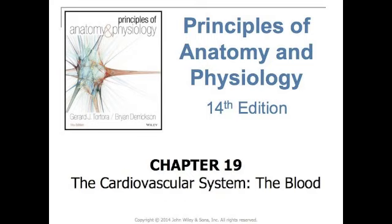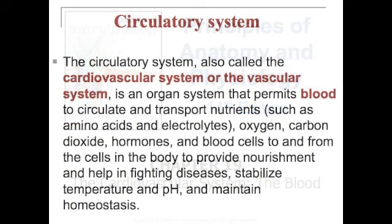Tonight's lecture concerns the cardiovascular system, and specifically the blood. This is chapter 19 in your textbook, beginning on page 696. The circulatory system, also called the cardiovascular system or the vascular system, is an organ system that permits blood to circulate and transport nutrients such as amino acids and electrolytes, oxygen, carbon dioxide, hormones, and blood cells to and from the cells in the body to provide nourishment, help in fighting diseases, stabilize temperature and pH, and maintain homeostasis.